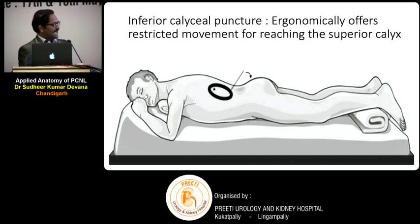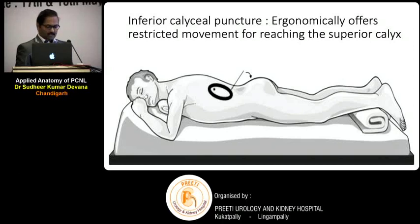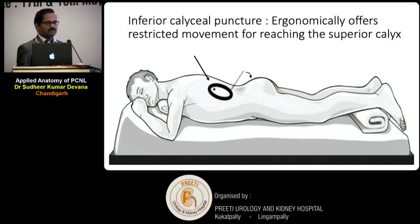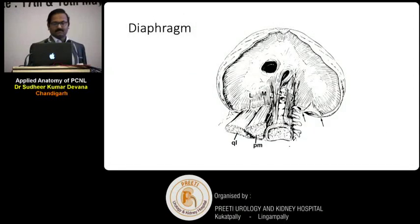The anatomical axis of the kidney will not allow you to go freely to the superior pole from an inferior access. On the other hand, if you do the same thing from a superior calyx, ergonomically it offers a better axis for both the superior and also the inferior calyx. So whenever you are planning any puncture in PCNL where you expect to clear both the superior and the inferior calyceal stones, superior calyceal access is better.